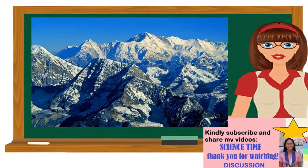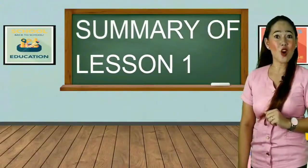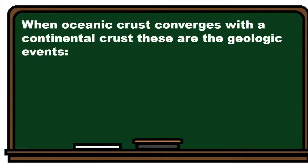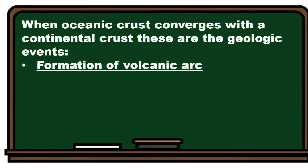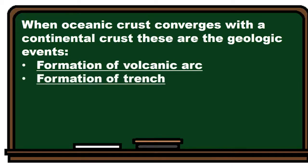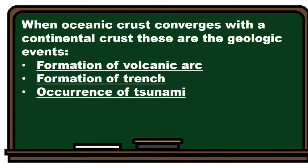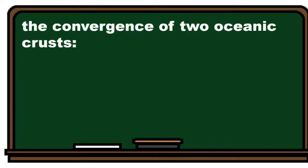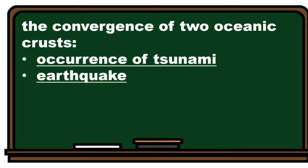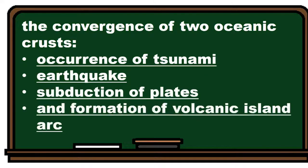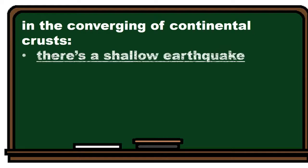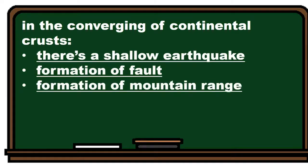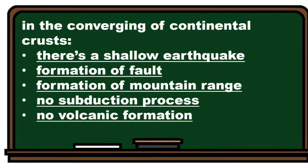Before we proceed to Lesson 2, let us summarize the different geologic processes and events that occur in every type of convergence. For oceanic-continental convergence: formation of volcanic arc, formation of trench, occurrence of tsunami, earthquake, and subduction of plates. For the convergence of two oceanic crusts: occurrence of tsunami, earthquake, subduction of plates, and formation of volcanic island arc. For the convergence of continental crusts: shallow earthquake, formation of fault, formation of mountain ranges, no subduction process, no volcanic formation, and no tsunamis.